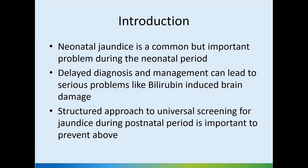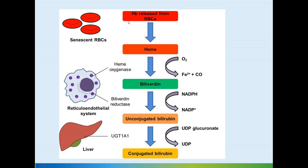A quick overview of bilirubin metabolism. When the RBCs are killed and hemoglobin is released, it breaks down into heme and porphyrin components. The heme is an iron-containing part acted on by heme oxygenase, and biliverdin is released. Biliverdin is a precursor of bilirubin, and by the action of biliverdin reductase, unconjugated bilirubin is formed.